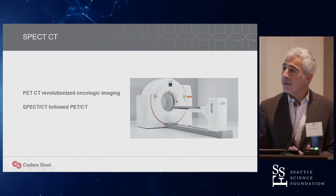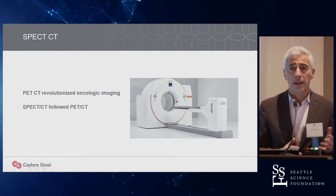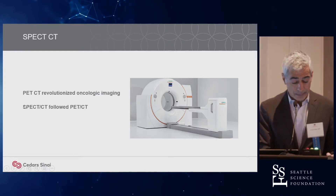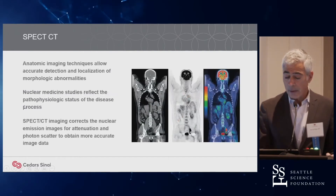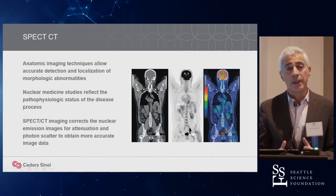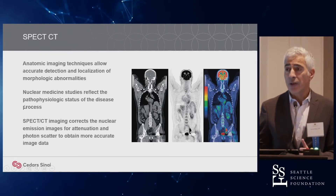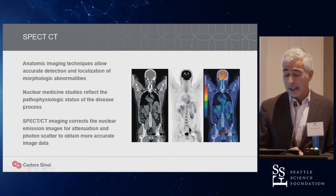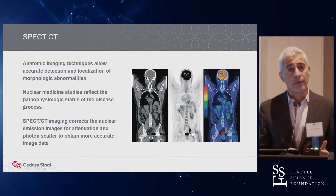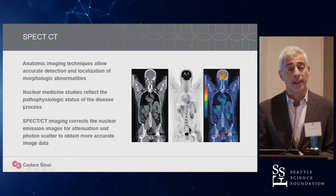SPECT-CT didn't want to be left behind, and we find applications in cardiac, oncology, and finally in musculoskeletal and spine areas. What brings these images together is the basic ability to integrate and fuse anatomic imaging with the SPECT imaging, giving you both functional and anatomic imaging. Not only that, but it enhances the functional imaging by way of attenuation correction and technical factors not available without CT.